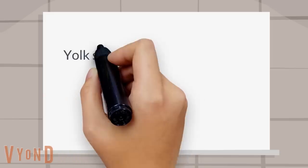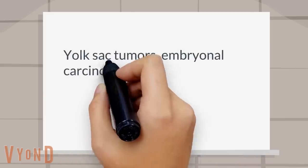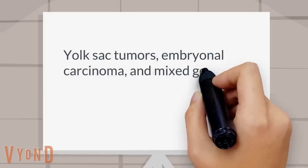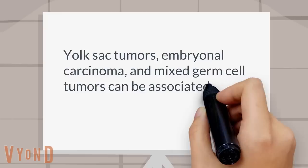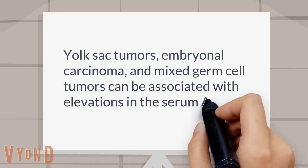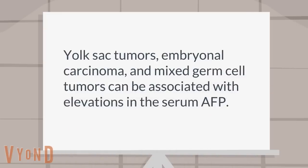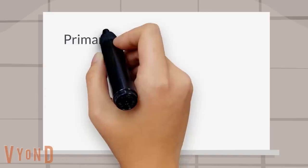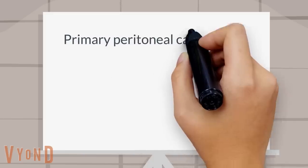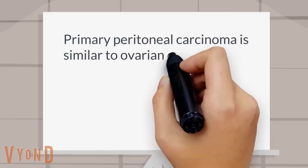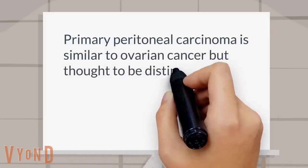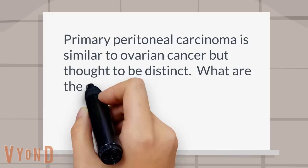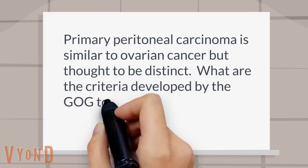What are some ovarian tumors associated with elevated serum AFP? Yolk sac tumors, embryonal carcinoma, and mixed germ cell tumors can be associated with elevations in the serum AFP. Primary peritoneal carcinoma is similar to ovarian cancer but thought to be distinct.